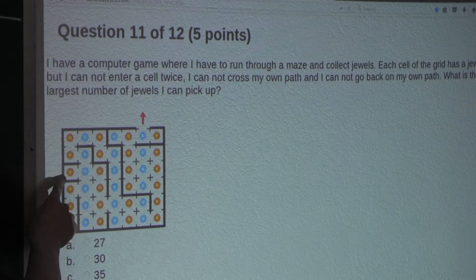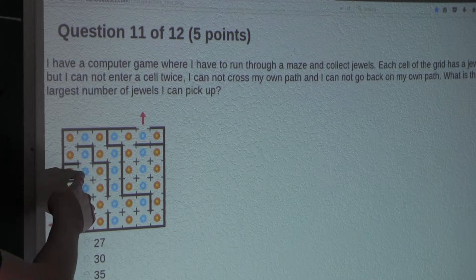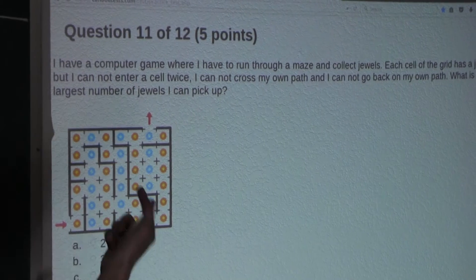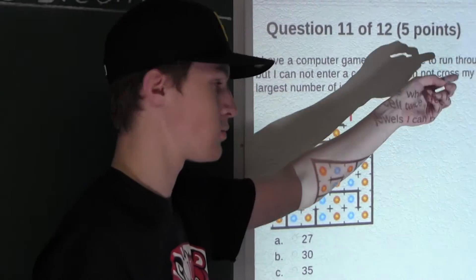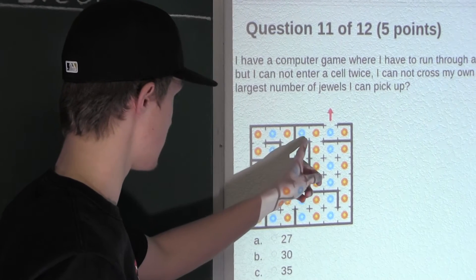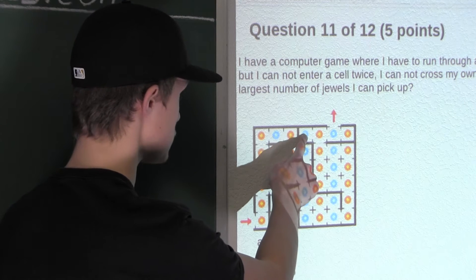So if we were to enter and obtain this jewel, we would only be able to go out this way, the same way that we came from, to continue our path. Well, of course we can't do that because we would be going back on our path. And likewise over here, this cell also only has 1 entrance, so we wouldn't be able to obtain that jewel.